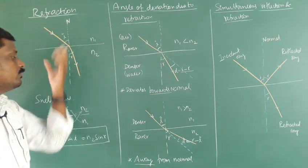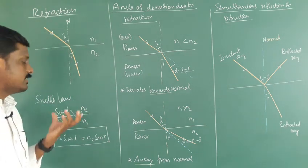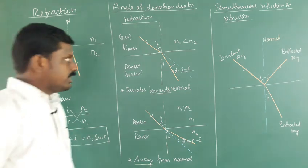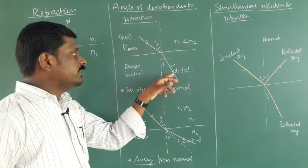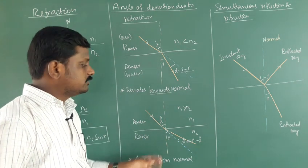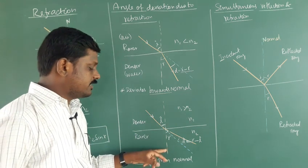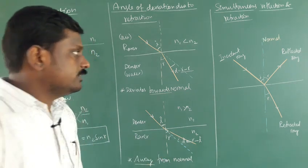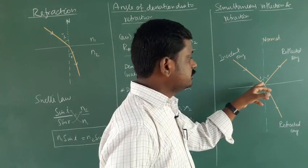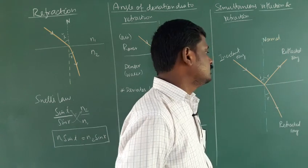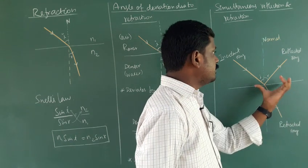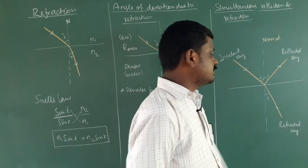To summarize, in this class we discussed refraction — the passing of light from one optical medium to another through the boundary. Snell's law gives n1 sin i equals n2 sin r. Light traveling from rarer to denser deviates towards the normal; from denser to rarer, the refracted ray is away from the normal. From the same source, part of the light is reflected and part is refracted — that is simultaneous reflection and refraction.